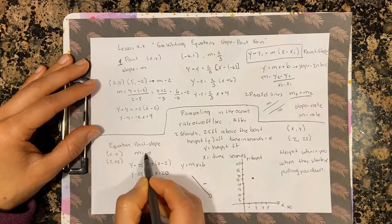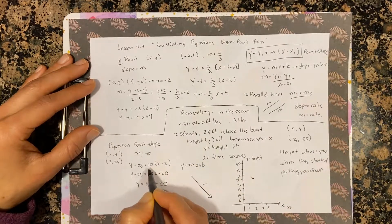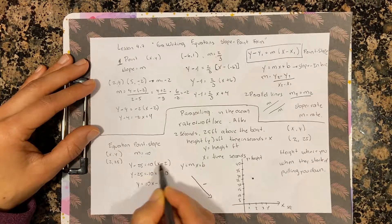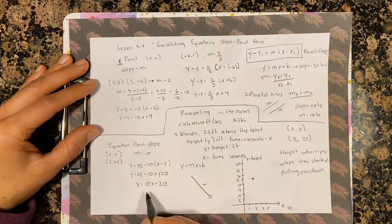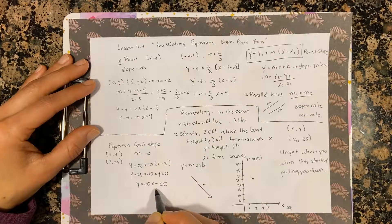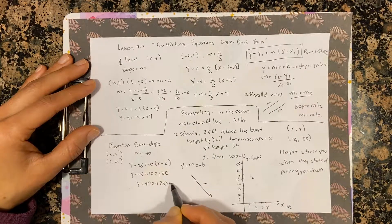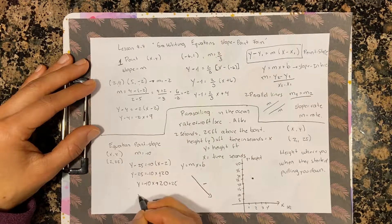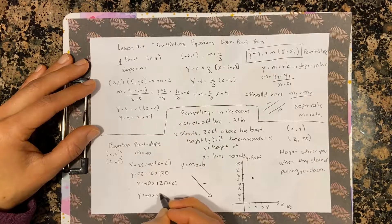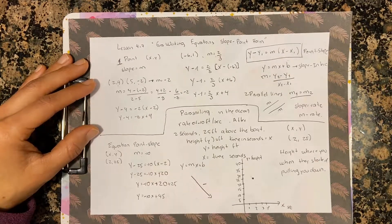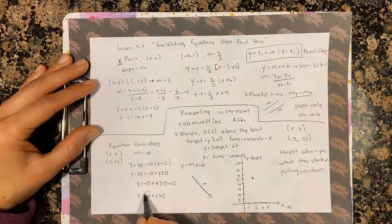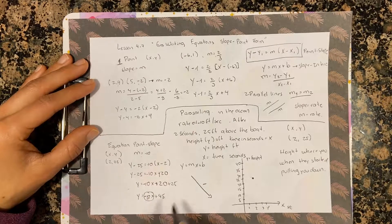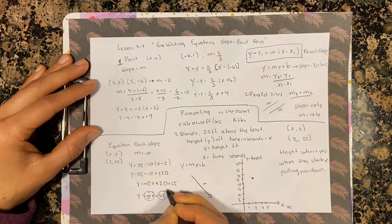Wait — I made a mistake. They are pulling you down, so the slope must be negative: m = -10. Correcting the equation: y minus 25 equals -10 times (x minus 2), which gives y = -10x plus 20 plus 25, so y = -10x + 45. The y-intercept is 45 and the slope is -10.